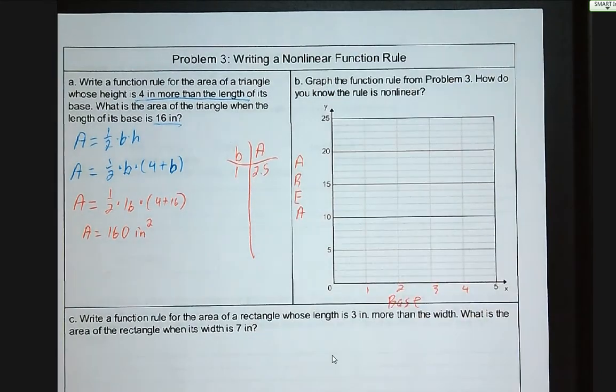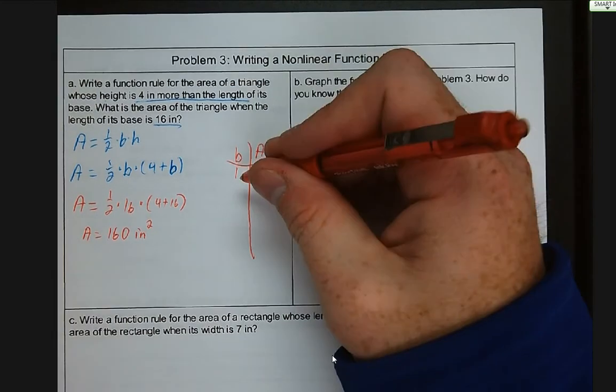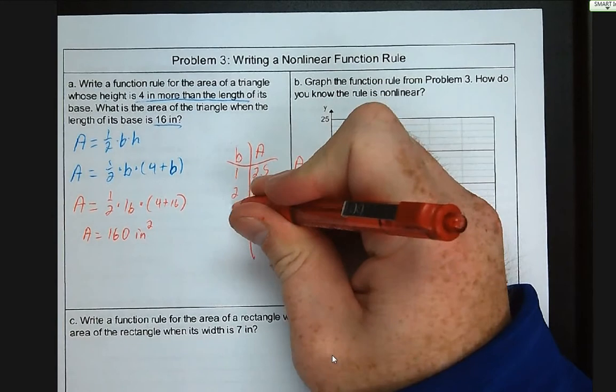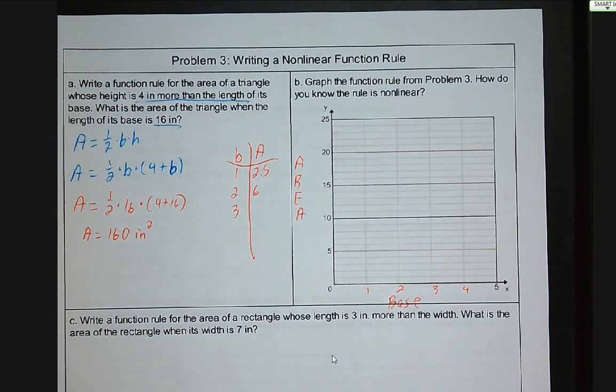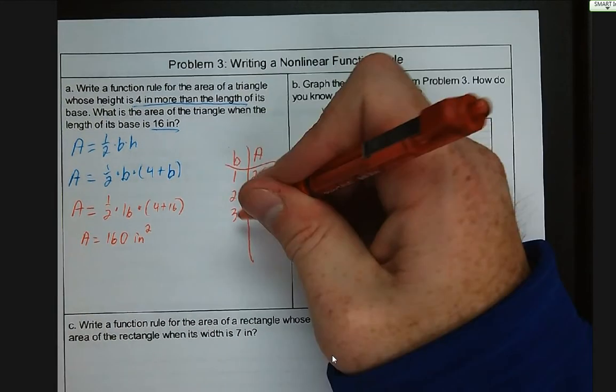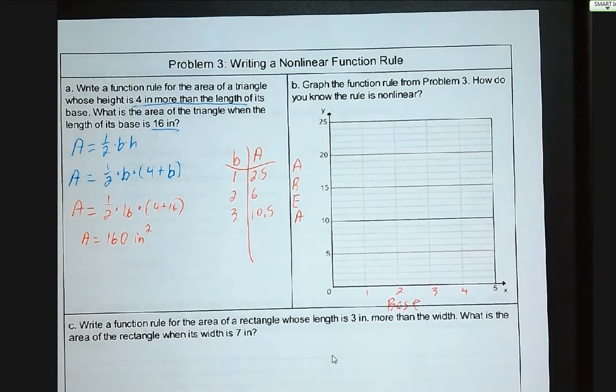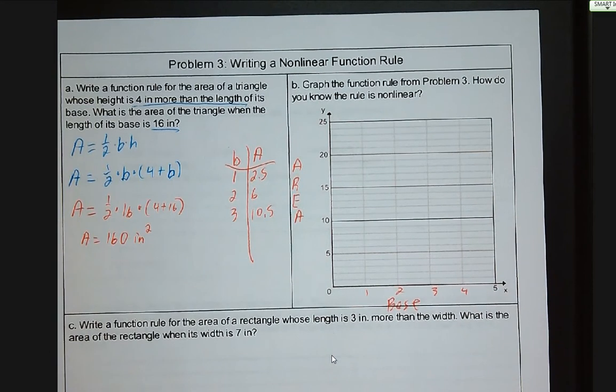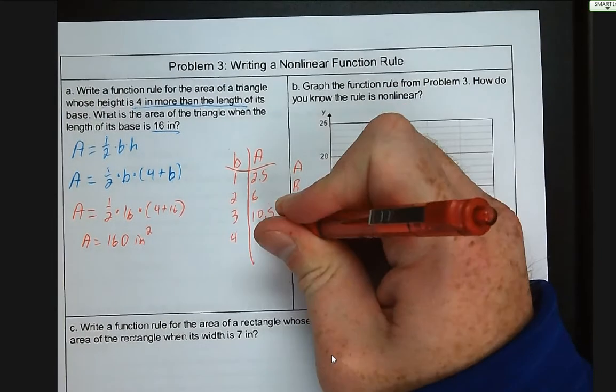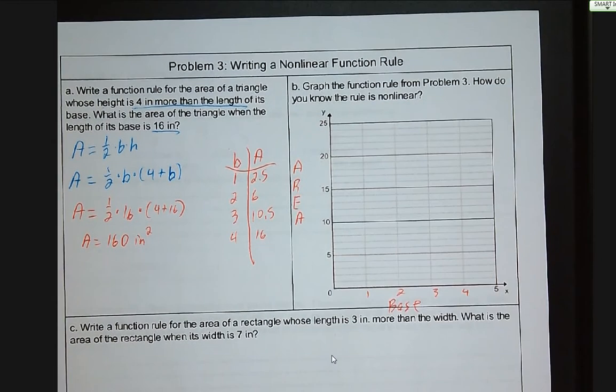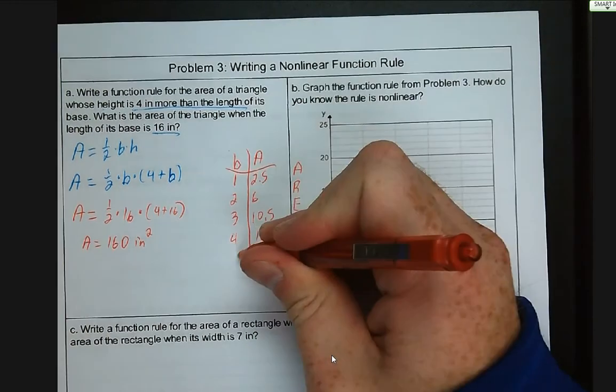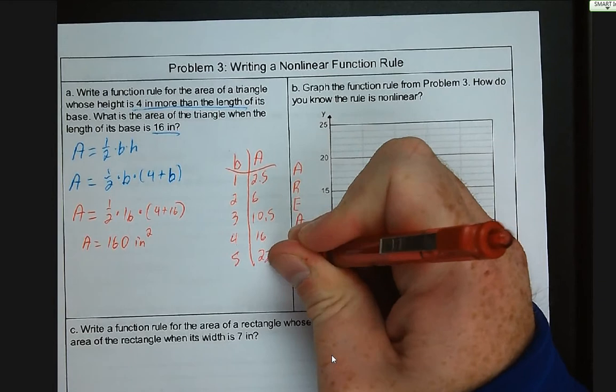For three, we've got 0.5 times three times seven, which is 10.5. And we have 0.5 times four times eight, which is 16. And we said we had five, so we have 0.5 times five times nine, which is 22.5.